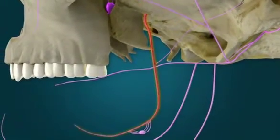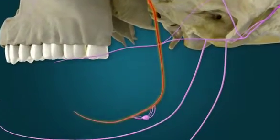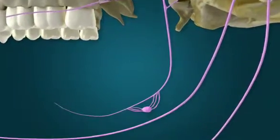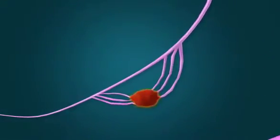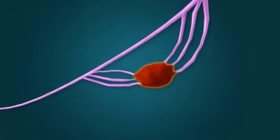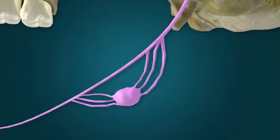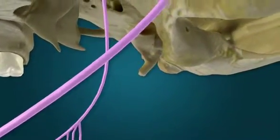It joins the lingual nerve, a branch of the mandibular nerve, and courses to the floor of the oral cavity. The parasympathetic preganglionic fibers leave the chorda tympani and synapse in the submandibular ganglion. The chorda tympani nerve also has special sensory fibers from the tongue for taste.